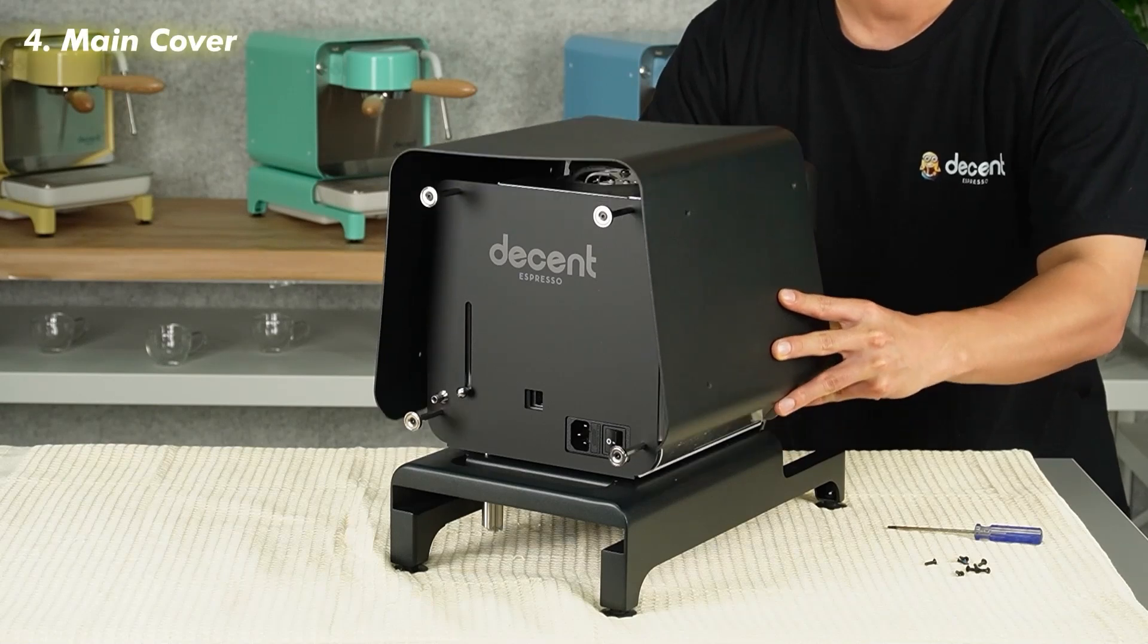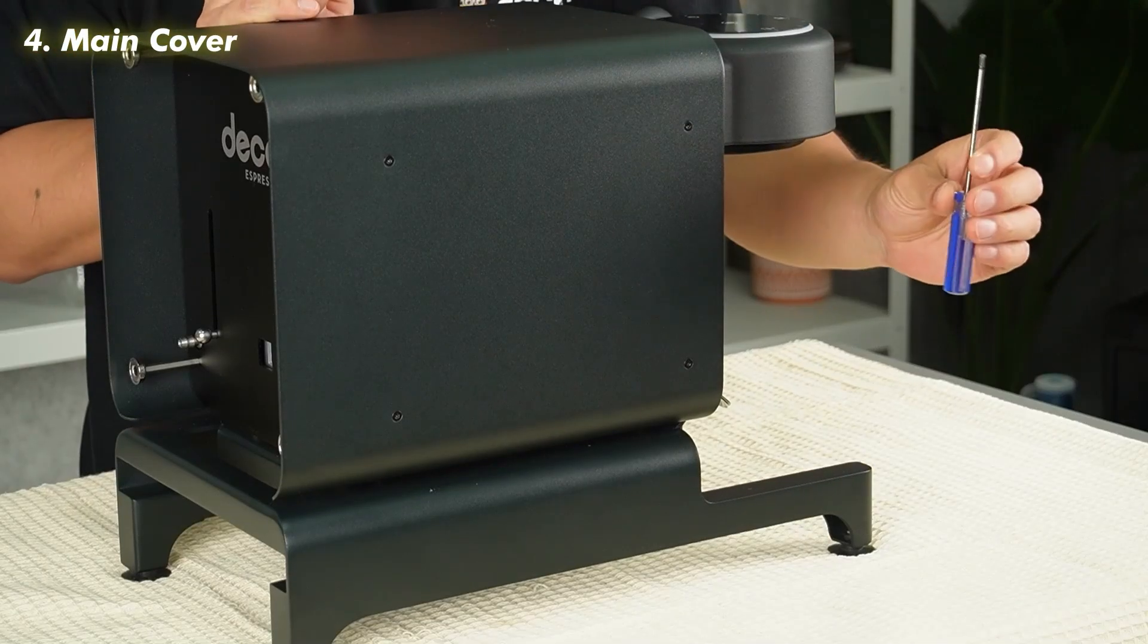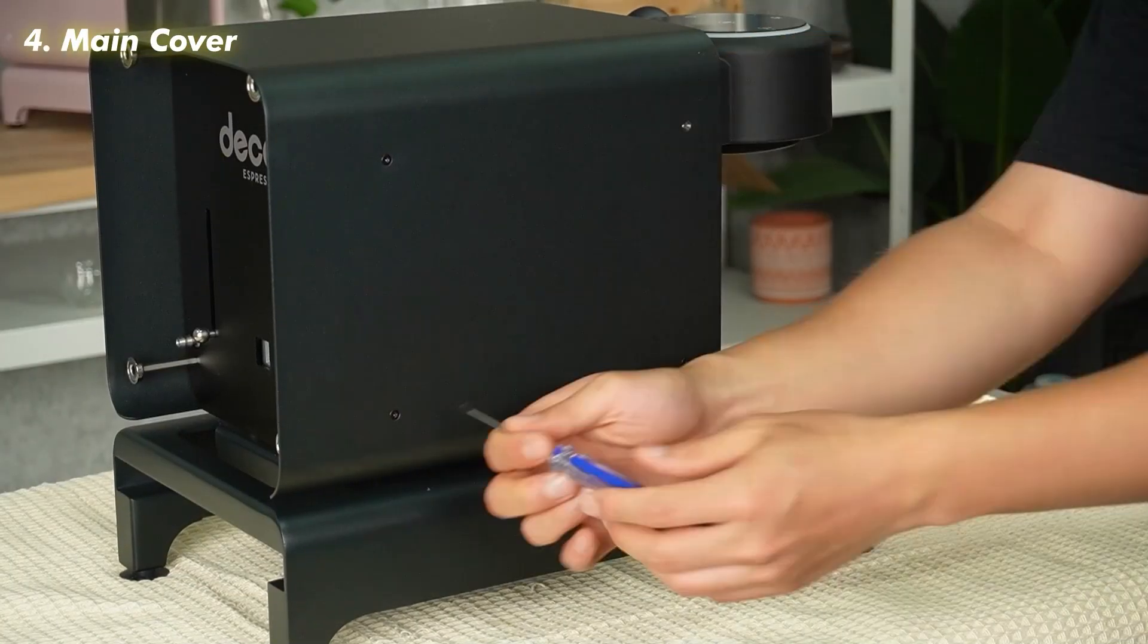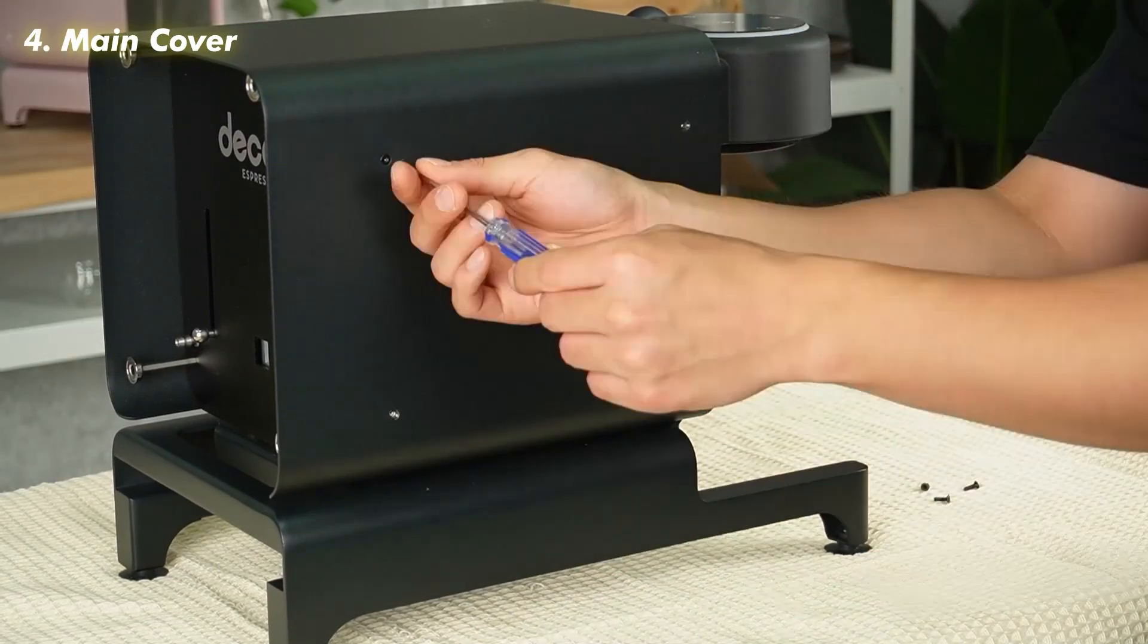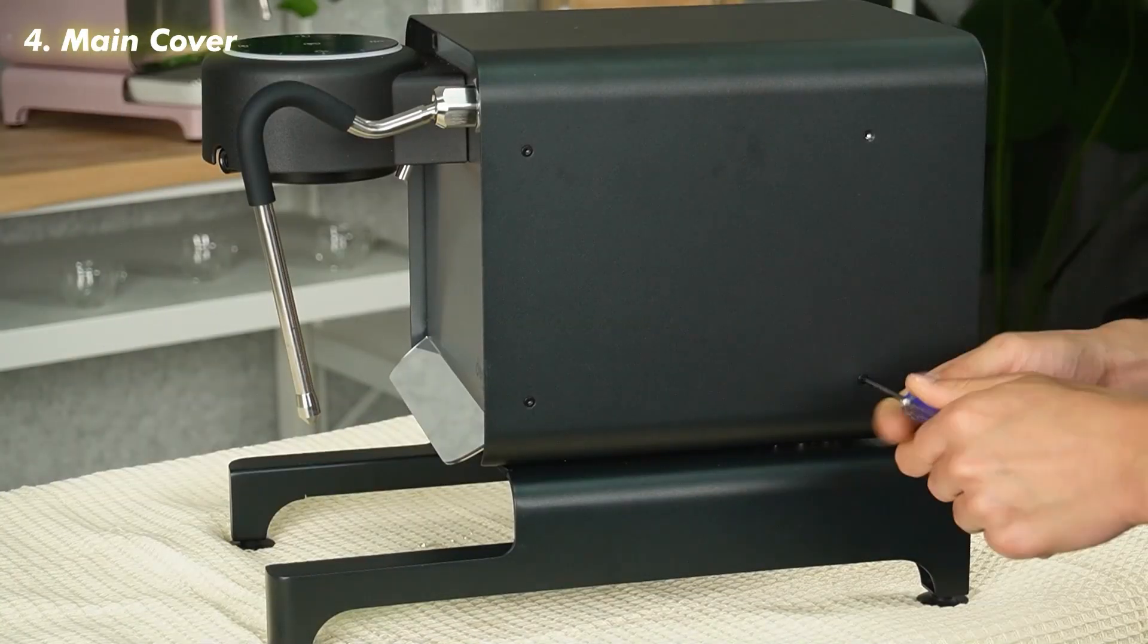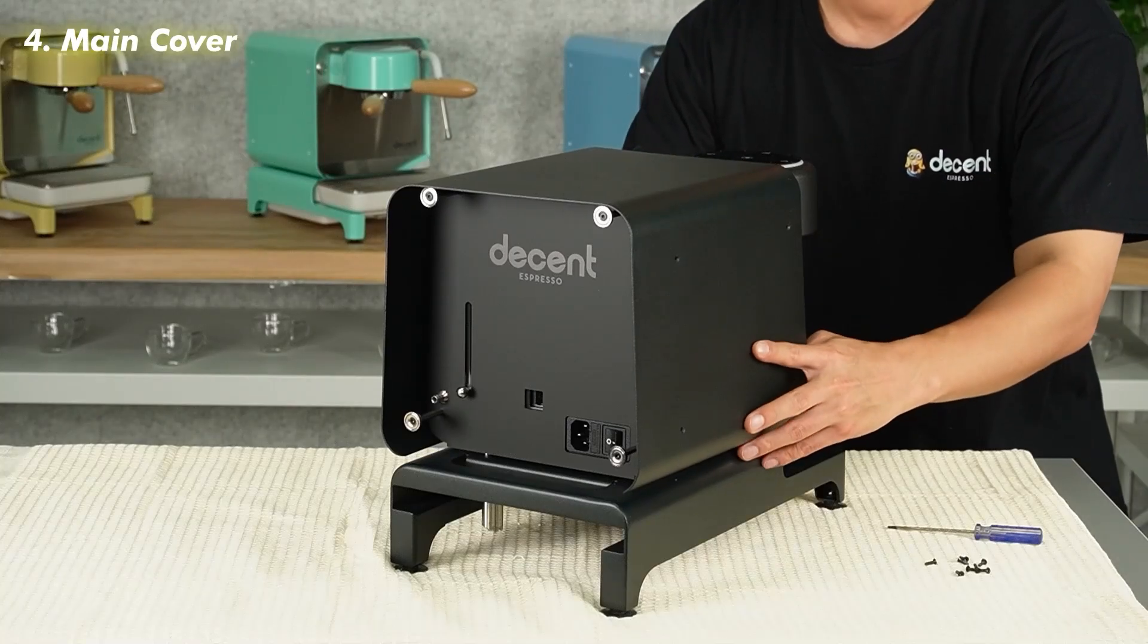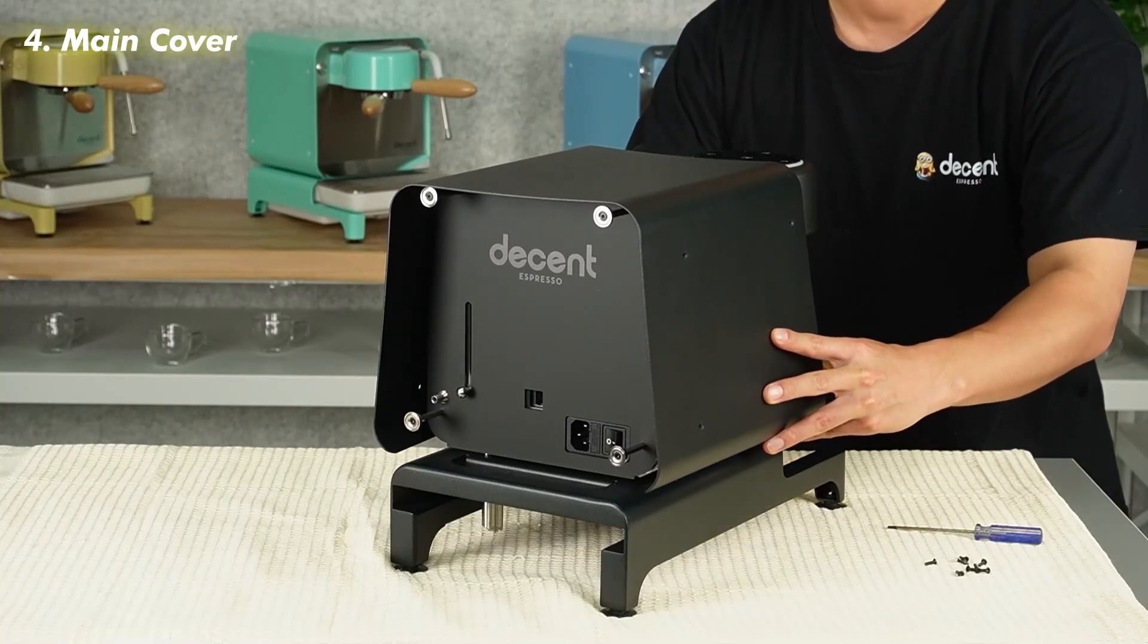Now you need to remove the main cover. Use a T10 Torx screwdriver to remove the eight screws on the main cover. Once all screws are out, gently stretch the sides of the cover.